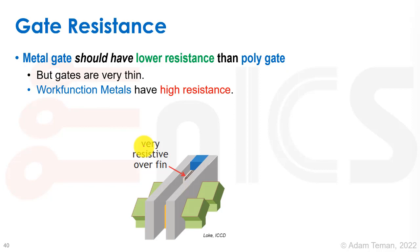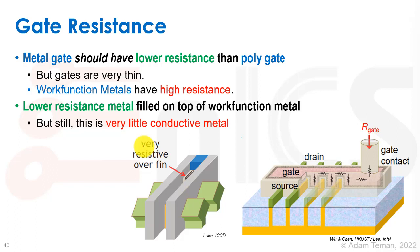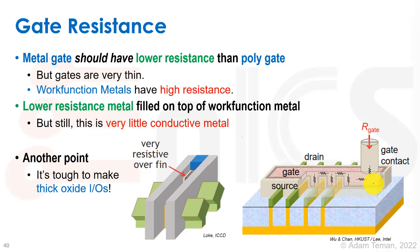Looking at gate resistance: we moved to metal gates because they should have lower resistance than poly gates, but the gates are so thin and the work function metals still have high resistance. We fill in with lower-resistance metal on top of the work function metal, but there's very little conductive material, especially as the gate gets smaller. Also, it's tough to make thick oxide IOs — in most technologies we could provide thick oxide IOs capable of 3.3V or 5V, but in FinFETs there's no room for these. So we only have much lower-voltage I/O devices, and we may need an interposer to go to another die that handles the I/O to off-chip interfaces.